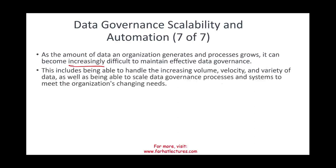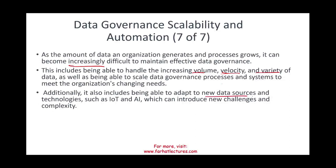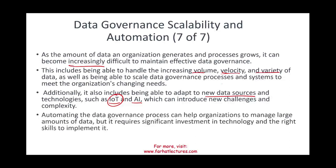Data governance scalability and automation: as data grows, organizations must handle increased volume, velocity, and variety of data, and scale the governance process to meet changing needs. Having a governance framework helps whether you have 10 gigabytes or 10,000 gigabytes of data. Organizations must also adapt to new data sources — such as the Internet of Things and artificial intelligence — which can introduce new challenges. Automating data governance can help manage large amounts of data, but it requires significant investment in technology and the right skills to implement.